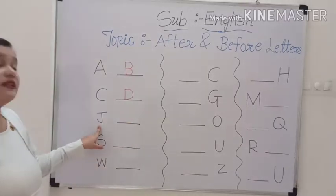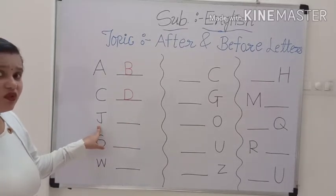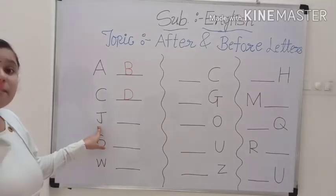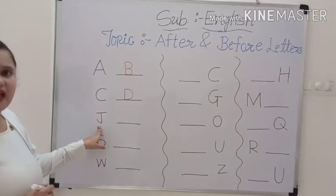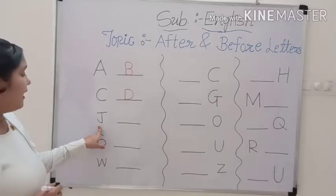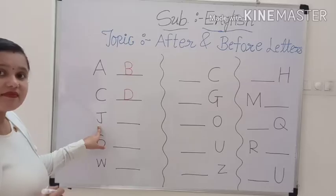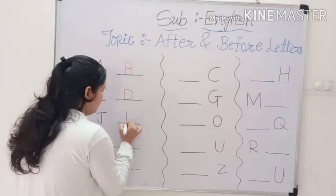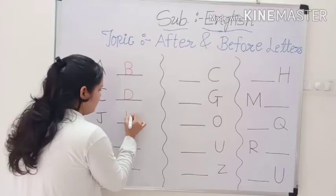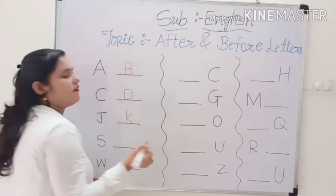Now, which letter is this? Do you know? Capital J. This is capital J. And which letter comes after J? K. Very good.